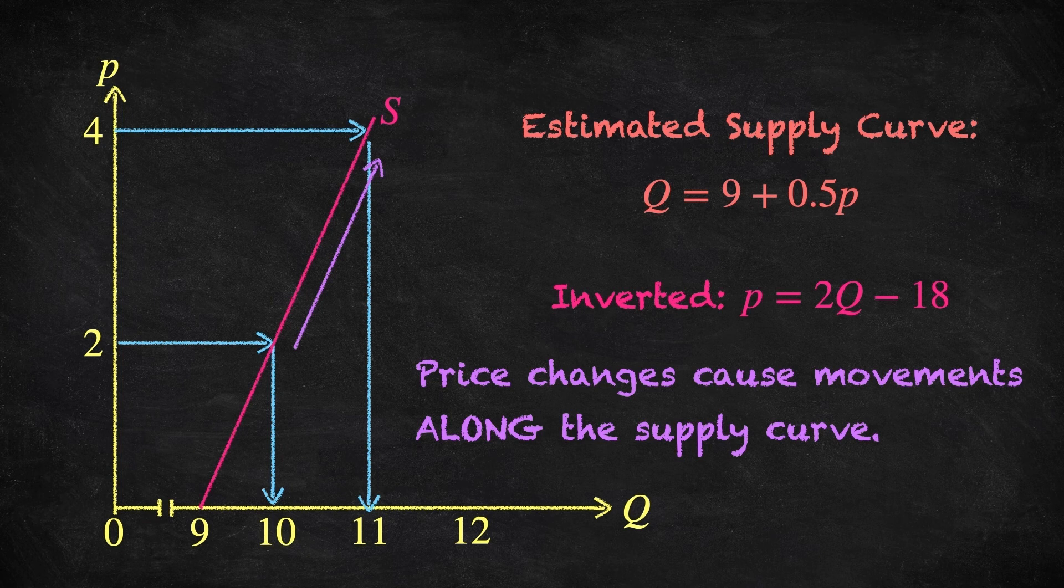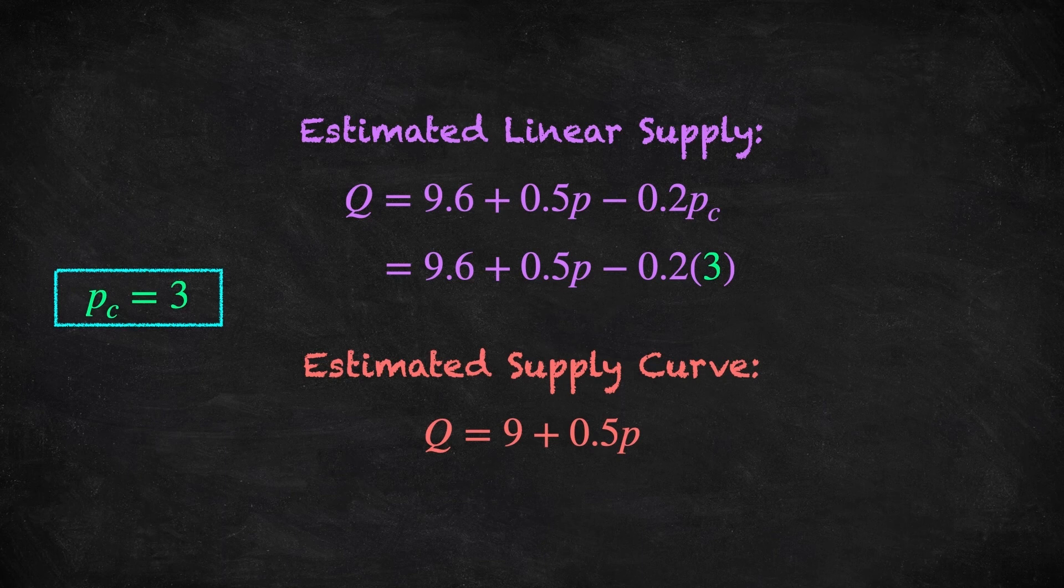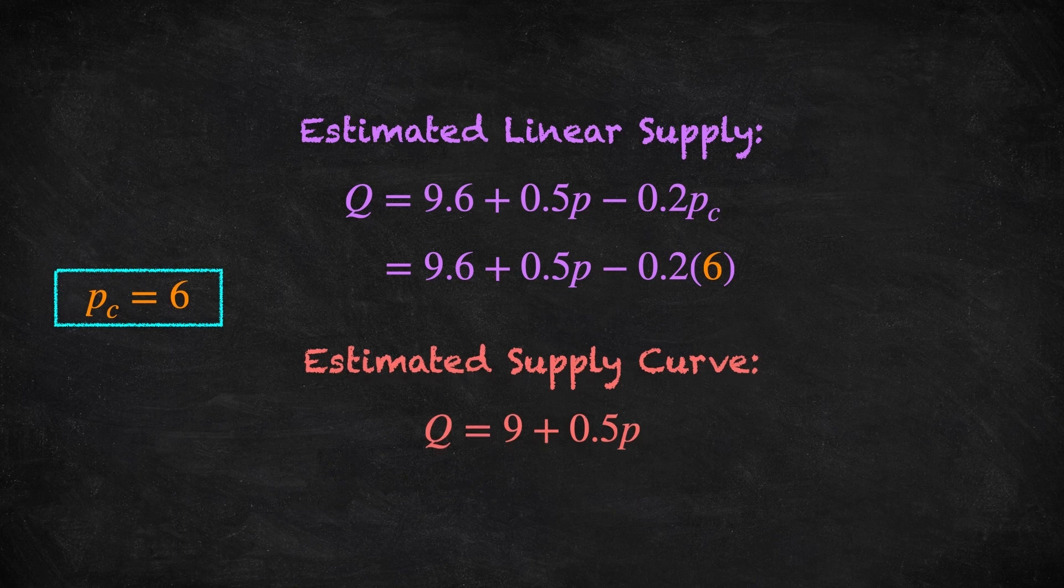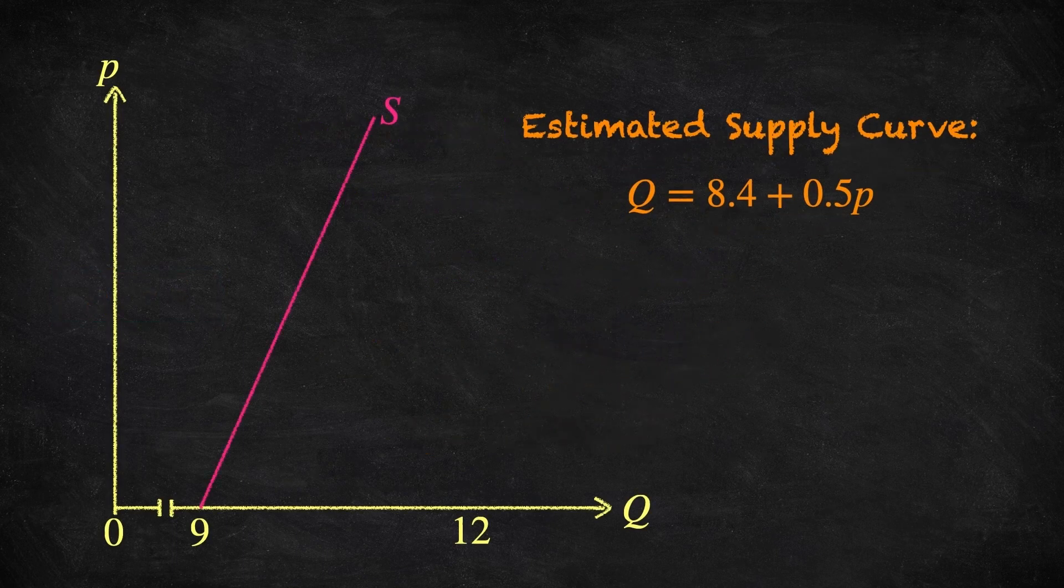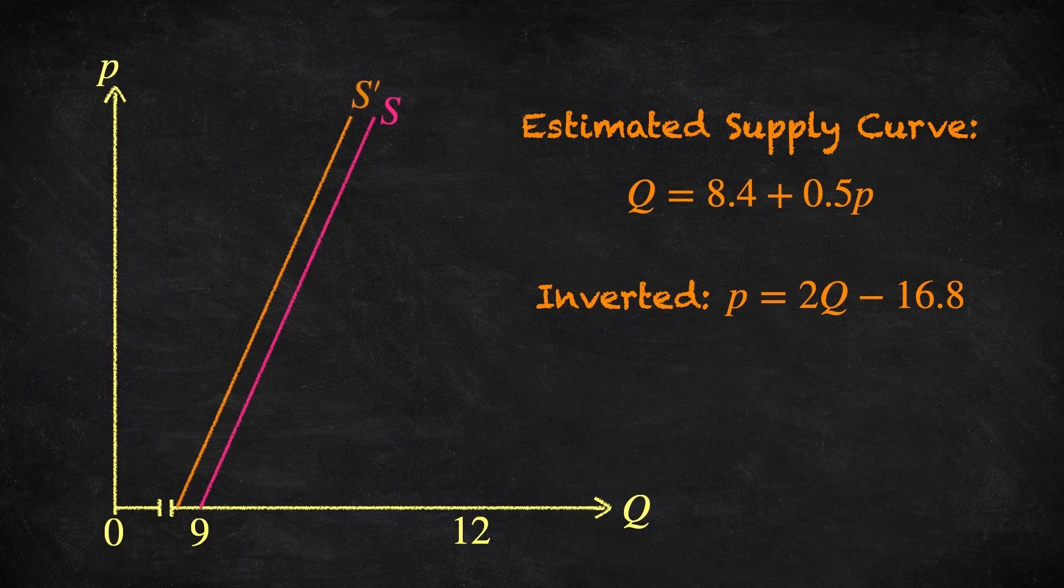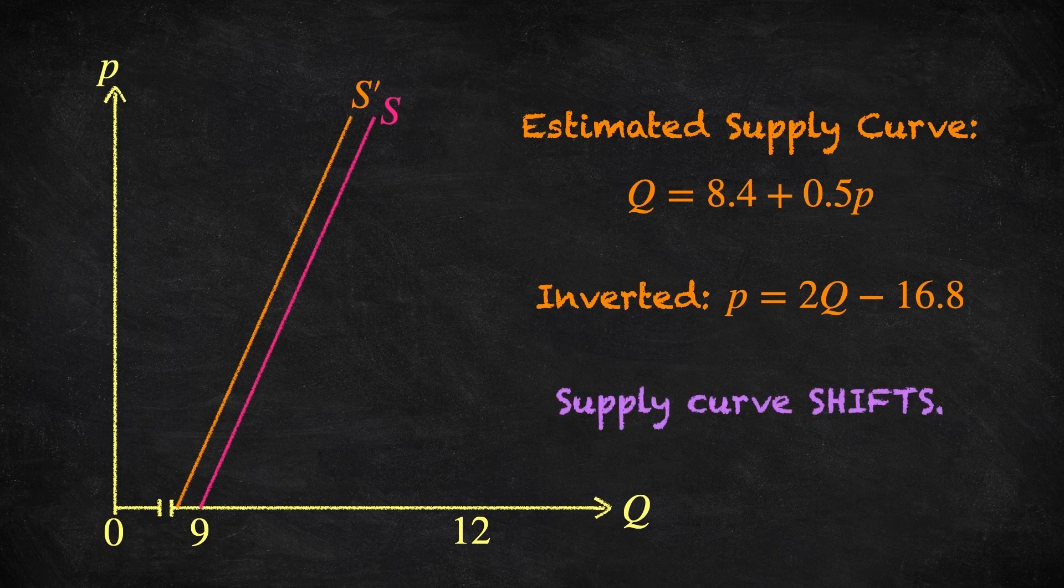Now to construct this supply curve, we took the price of cocoa as fixed at 3 dollars. So what happens if the price of cocoa changes? Well, suppose the price of cocoa increases from 3 dollars to say 6 dollars. Then we can recalculate the supply curve and we get Q is equal to 8.4 plus 0.5 times the price. Inverting this to produce a diagram of the new supply curve gives the following. We see that on this new supply curve, the firm supplies less at all coffee price levels.